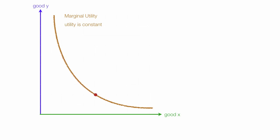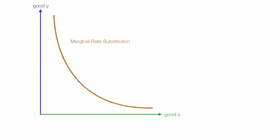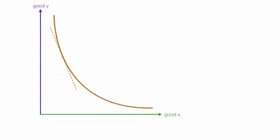Anywhere along this curve, utility is constant, which means the change in utility is zero. I'll also discuss marginal rate of substitution and how the MRS, or the slope of the tangent line, shows how consumers trade two goods. The slope of the tangent line is not constant along the indifference curve — it changes and varies. And I'll be using calculus.